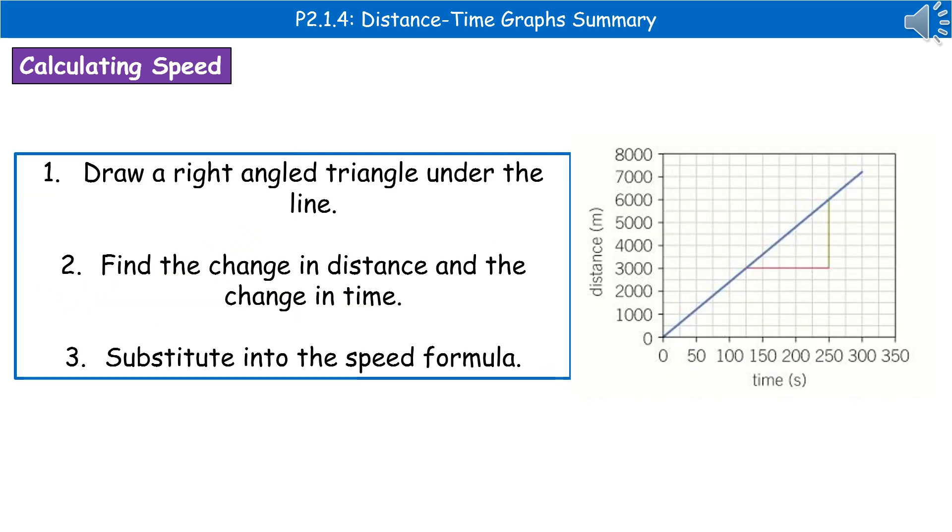One of the things they could ask you to do on a question relating to distance time graphs is to calculate the speed. If we've got a nice setup like the one on the right there with a nice diagonal line, then in order to calculate speed, draw a right-angled triangle underneath the line as illustrated there. Then you find the change in distance and the change in time for your triangle, and then you substitute that into your speed formula. Distance divided by time will give us the speed.